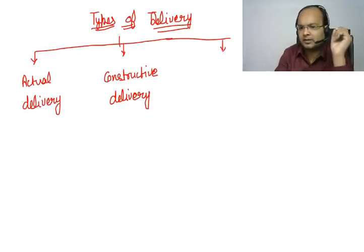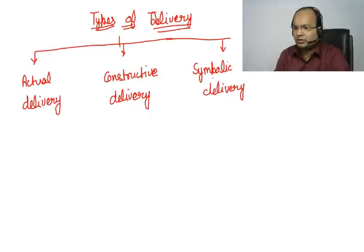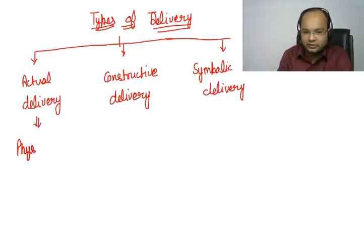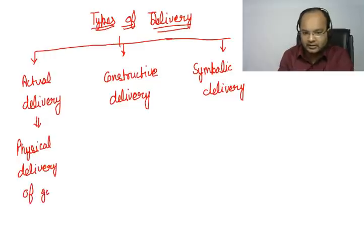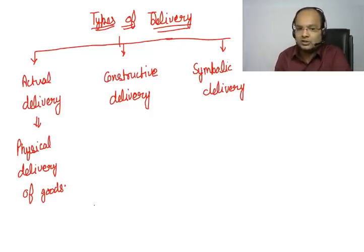Now what exactly are these? Listen and understand carefully. Actual delivery is basically the physical delivery of goods. If goods are physically delivered, then we call it actual delivery. For example, A is a seller and B is a buyer who has purchased goods — say B has 10 shirts. If A physically hands those over to B, this will be termed as actual delivery. It's very simple.